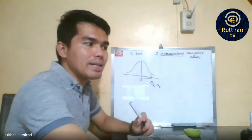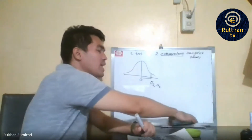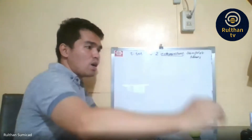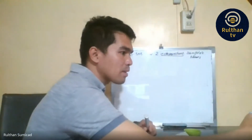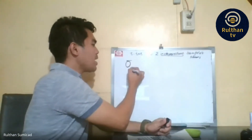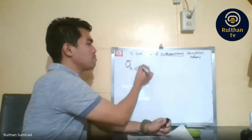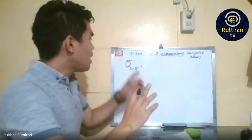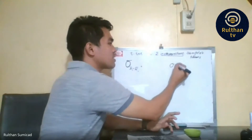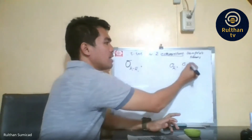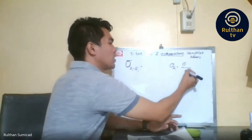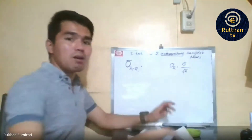Now let's talk about the standard error of difference. We understand from last time that we computed the standard error. This time, we will also have the standard error of difference, symbolized as sigma X-bar one minus X-bar two — for mean one and mean two.